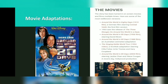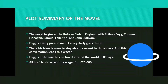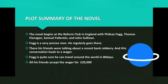There are many movie adaptations, but the famous one was 'Around the World in 80 Days' released in 2004, where Jackie Chan was the hero. The plot summary begins at the Reform Club in England, with Phileas Fogg, Thomas Flanagan, Samuel Valentin, and John Sullivan sitting by a fireplace reading newspapers.